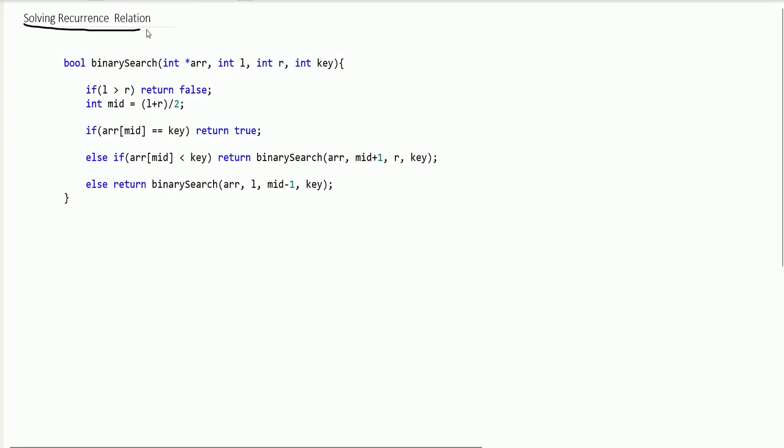Let's see how to solve a recurrence relation. You saw this code earlier in the previous lecture. The recurrence relation for this was T(n) equals T(n/2) plus 1, and the base case was T(1) equals 1.